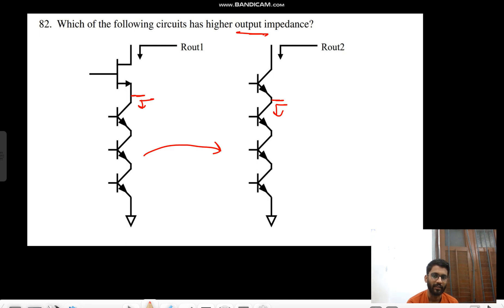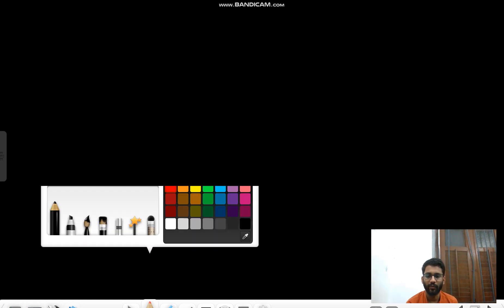Exact same configuration, right? All three are BJTs connected in series, so that same configuration we have. So let us assume from here we are seeing R resistance, okay? So we can replace both of the configurations.